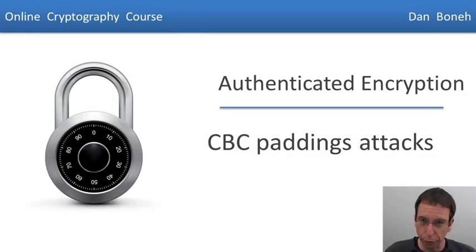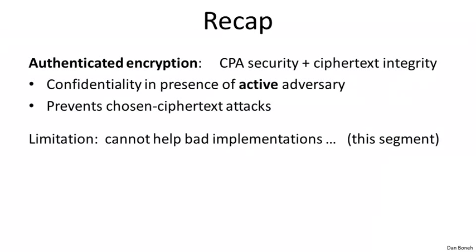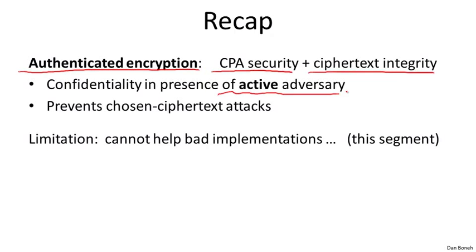In this segment and the next, I want to show you two very cute attacks on deployed authenticated encryption systems. But first, let's do a quick recap. Recall that authenticated encryption means the system provides CPA security plus ciphertext integrity. Authenticated encryption means we can preserve confidentiality in the presence of an active adversary, and moreover, the adversary can't modify the ciphertext in any way without being detected. We also showed that authenticated encryption prevents very powerful chosen ciphertext attacks.